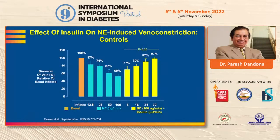Here you can see dose-dependent vasoconstriction in blue with norepinephrine, and then dose-dependent vasodilatation with co-infusion of insulin at various doses. There is a nice dose-response effect, and you can finish this experiment in about two hours.